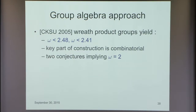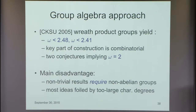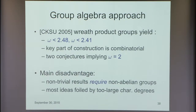To summarize briefly: in other product groups we've gotten bounds that are not better than the best known but are significant. The key parts of each construction are combinatorial, and each comes with an associated conjecture that would imply Ω=2. The disadvantage is that non-trivial results require non-abelian groups, and most ideas we have are foiled by large character degrees—you get a nice construction, then find the representation theory kills it.